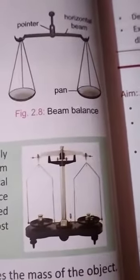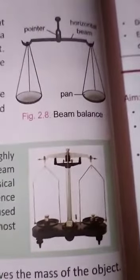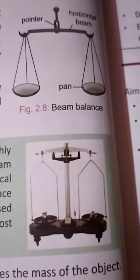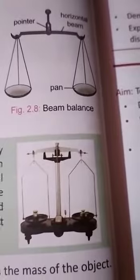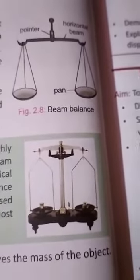Now, what is the principle? When both the pans are empty or loaded with equal masses, a state of balance is achieved. In such a state, the beam is horizontal and the pointer points vertically up.